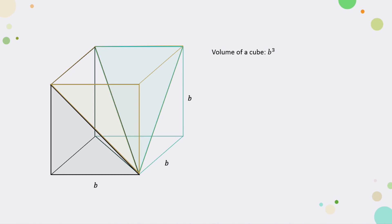Since three of those pyramids, each the same size and shape, make up this cube with dimensions B×B×B, we can say that the volume of a square pyramid with height equal to the side length of the base is one-third of the cube, or 1/3 B³. But what if we have a square pyramid with a height H that is different from the side length of the base B? Then we can use this cube to solve for that formula.